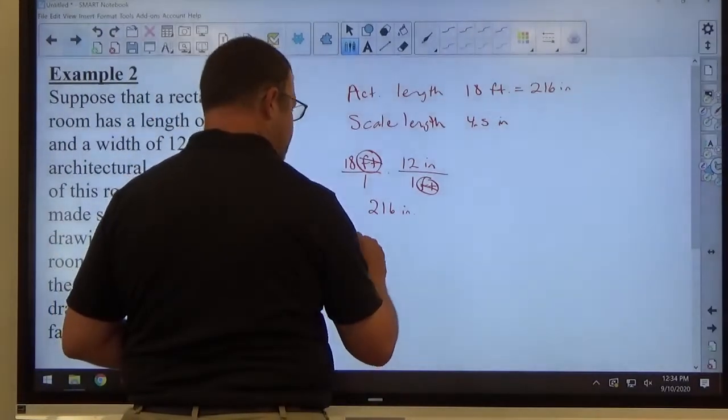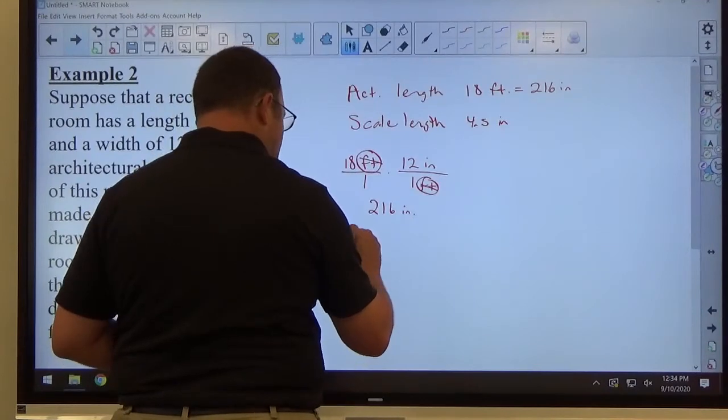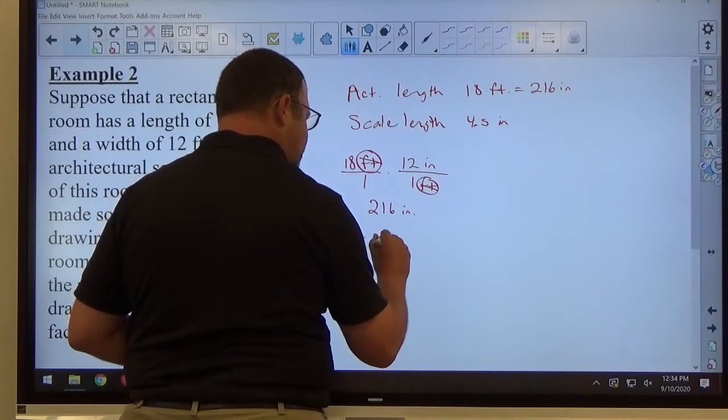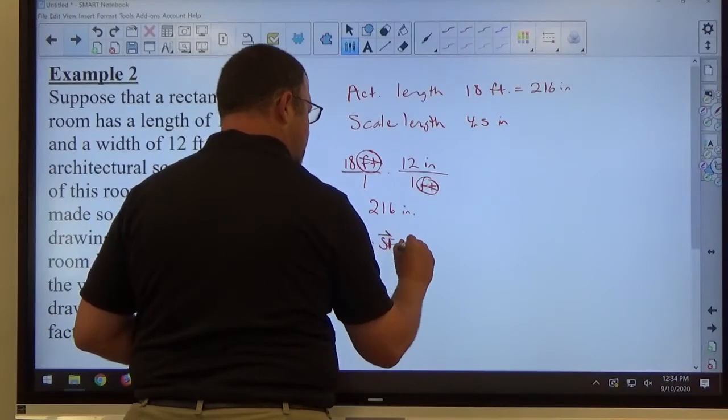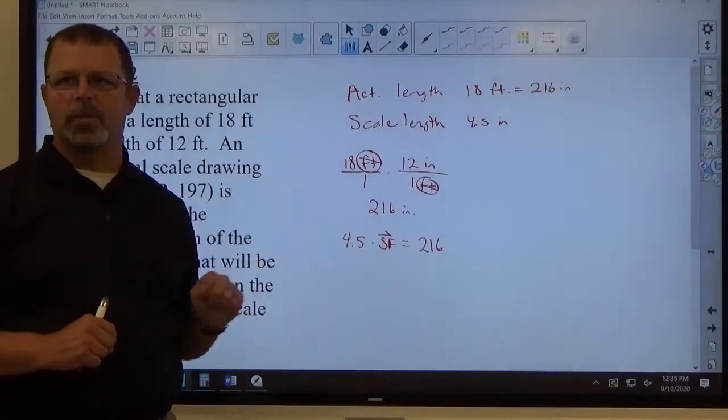So, 216 inches is the outcome. So, if I take my scale drawing, which is 4.5, multiply by a scale factor that I don't know yet, that should equal my actual length. Scale length times scale factor equals actual length.